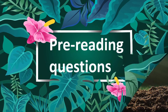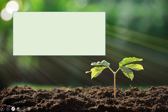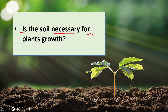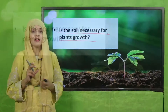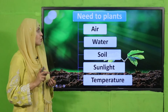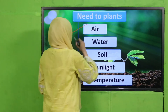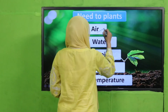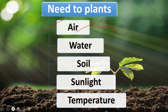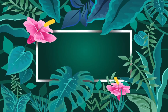Now the time for the pre-reading question. Quickly tell me: is soil necessary for plant growth? Yes, soil is necessary for plant growth. A plant needs air — and from air it takes carbon dioxide — as well as water, soil, sunlight and temperature to grow well.